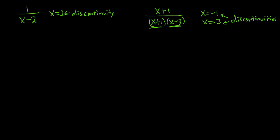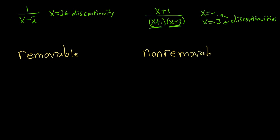In this video we want to talk about two special types of discontinuities. The first type is called a removable discontinuity, and the second type is called a non-removable discontinuity. We want to differentiate between the two. Intuitively, a removable discontinuity is a discontinuity that can be fixed — you can take your function and make it continuous at that point by redefining it.